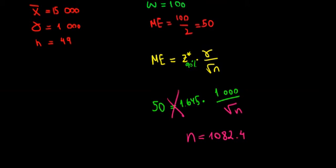In statistics, whenever we find a value for the number of observations, we have to round up because it doesn't make sense to have 1082.4 observations. We round to 1083 observations to be more conservative and on the safe side.